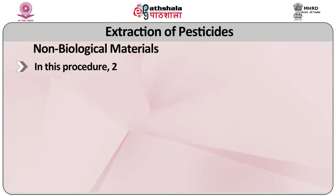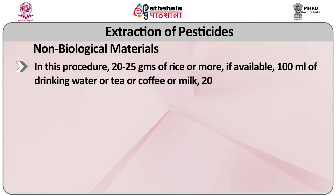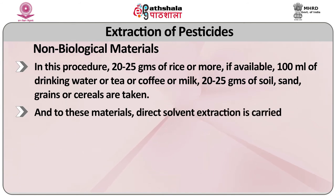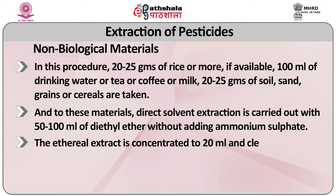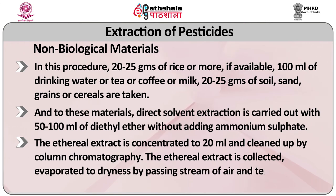The last method is for the extraction of pesticides from non-biological material — that is, from vegetable grains or other edible commodities. In this procedure, 20–25 grams of rice or more if available, 100 ml of drinking water, tea, coffee, or milk, 20–25 grams of soil, scent, grains, or cereals are taken. Direct solvent extraction is carried out with 50–100 ml of diethyl ether without adding ammonium sulfate. The ethereal extract is concentrated to 20 ml and cleaned up by column chromatography. The ethereal extract is collected, evaporated to dryness by passing a stream of air and tested for pesticides.